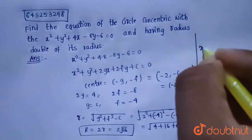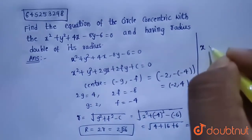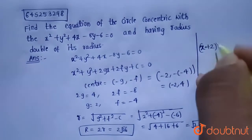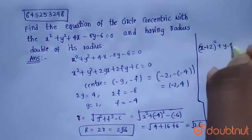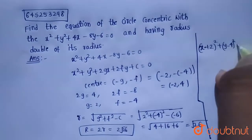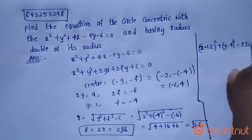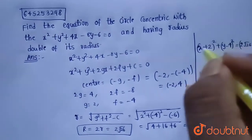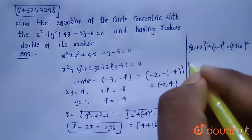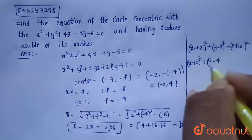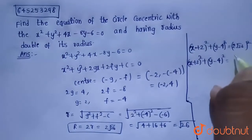The equation is (x − h)² + (y − k)² = R². Substituting: (x − (−2))² + (y − 4)² = (2√26)². That gives (x + 2)² + (y − 4)² = 4 × 26 = 104. This is the required equation of the circle.